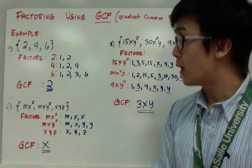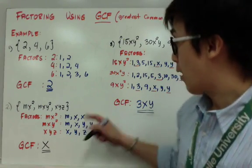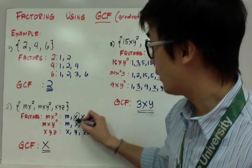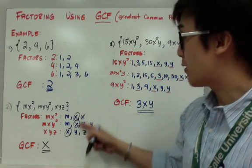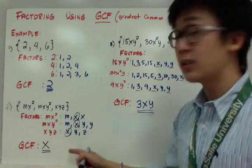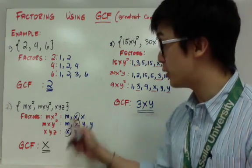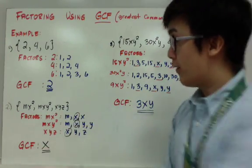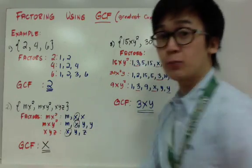And to check what my greatest common factor is, all of them has x: 1, 2, 3. So that means my highest or my greatest common factor for these terms will be x. So that's how you find your GCF when you are given an expression.